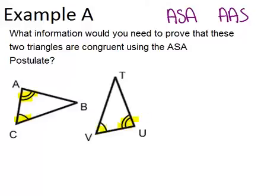So if we're trying to use ASA, we already have our two pairs of angles. So the last thing we need is a pair of sides in between those two angles that's congruent.